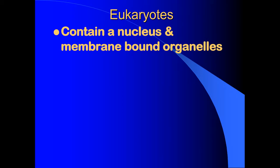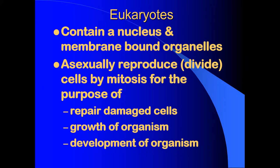In eukaryotes, we need to remember that they contain a nucleus and membrane-bound organelles. They asexually reproduce, or they divide, by a process called mitosis for several purposes. One is to repair damaged cells, like if you get a bruise and need to repair the cells that were damaged. Another is for the growth of the organism, such as when you start out as a baby and are much smaller than you are today. And finally, for the development of the organism — when a cell goes from being a general cell to having a specific purpose, so we can differentiate the different organs in our body. Your liver cells do a different job than your eye cells, and your eye cells do a different job than your brain cells. That's called development.